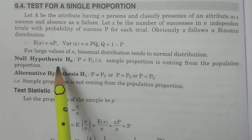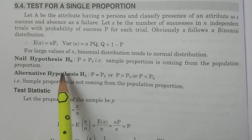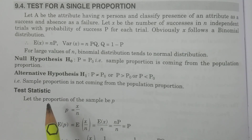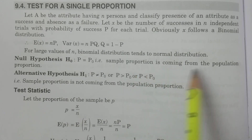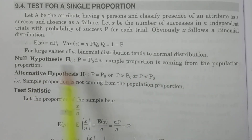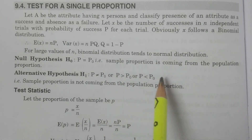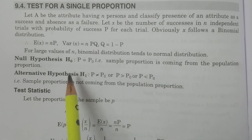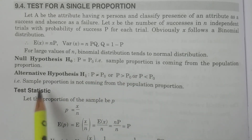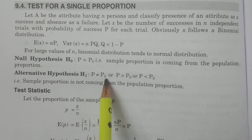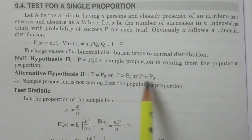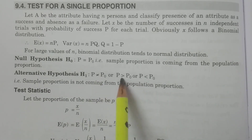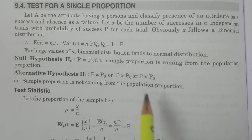There are four important points: null hypothesis, alternative hypothesis, test statistic, and comparison and conclusion. The null hypothesis H₀: capital P is equal to capital P₀ — the sample proportion is coming from the population proportion; that is, the sample is drawn from the population. The alternative hypothesis H₁: P not equal to P₀, or P greater than P₀, or P less than P₀. The first is a two-tail test; the latter two are one-tail tests — right-tail and left-tail.